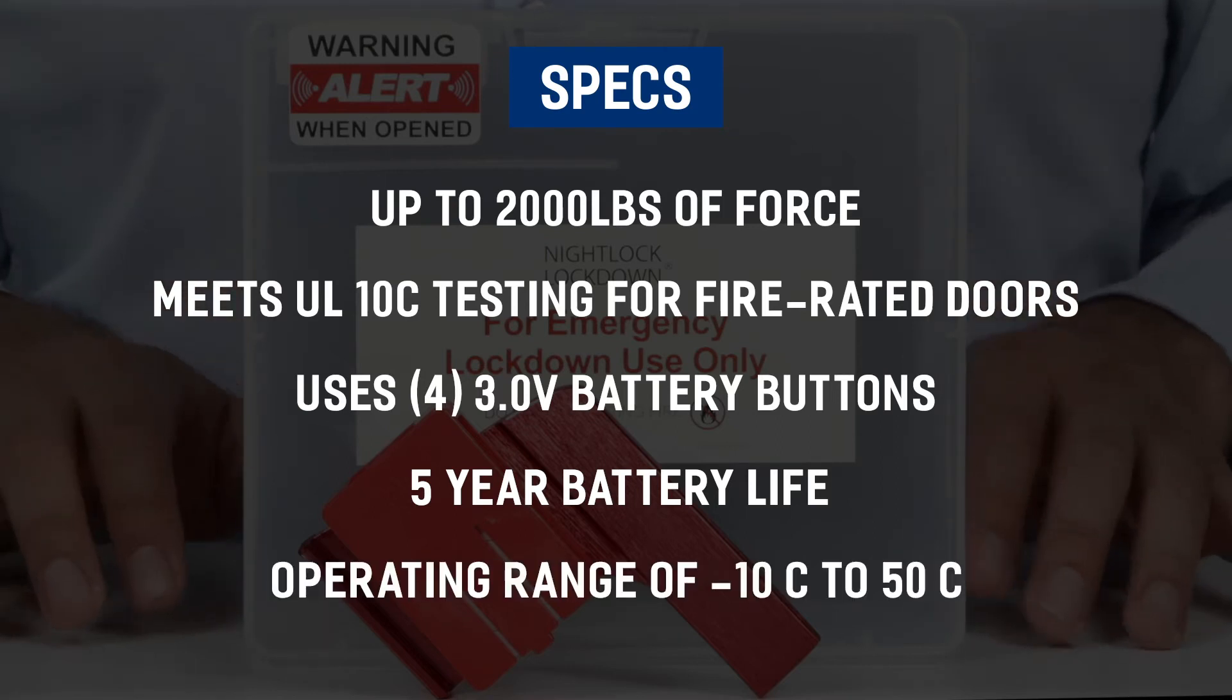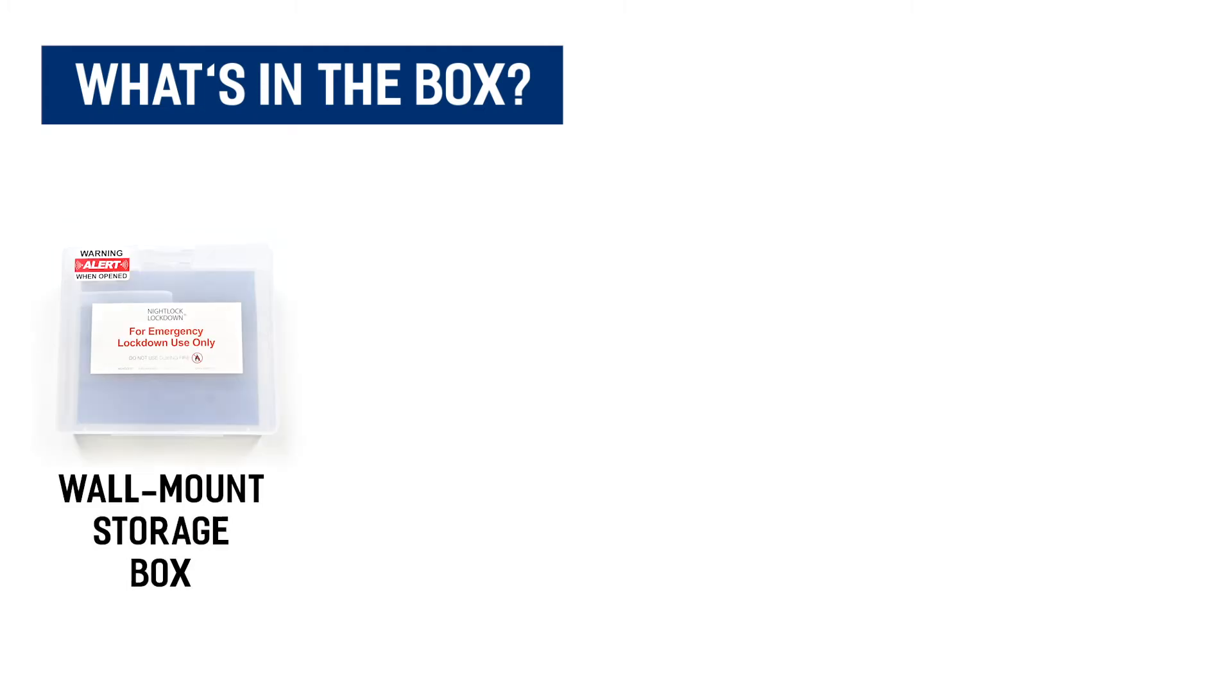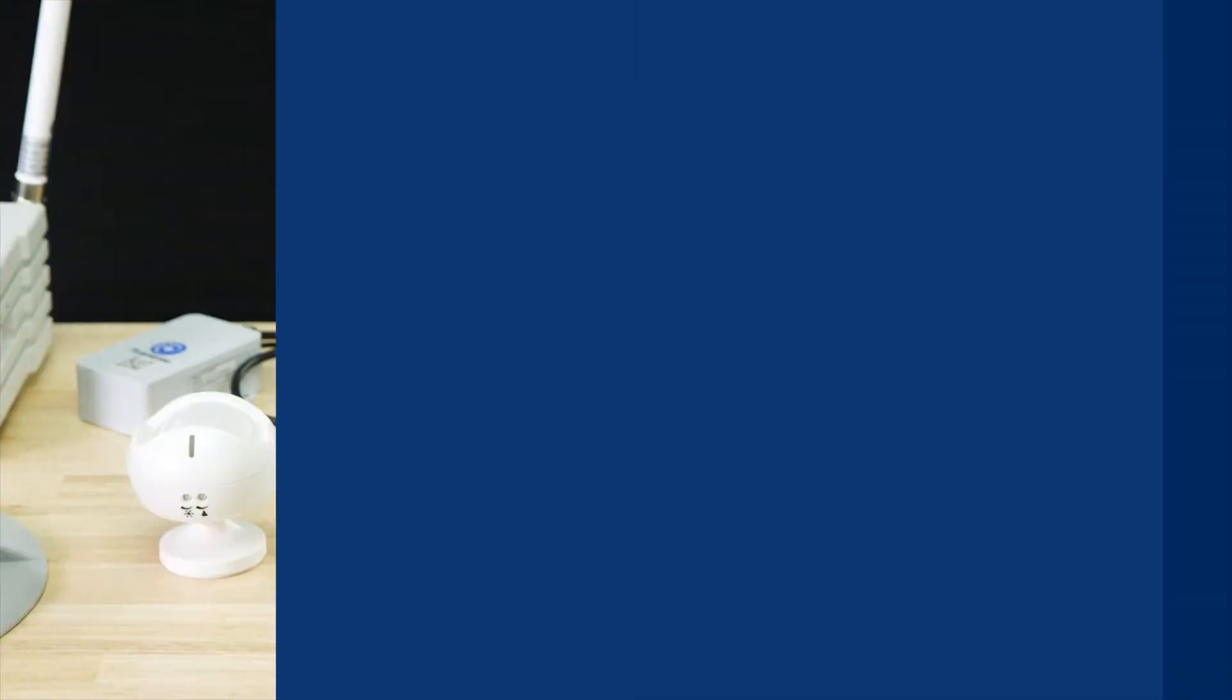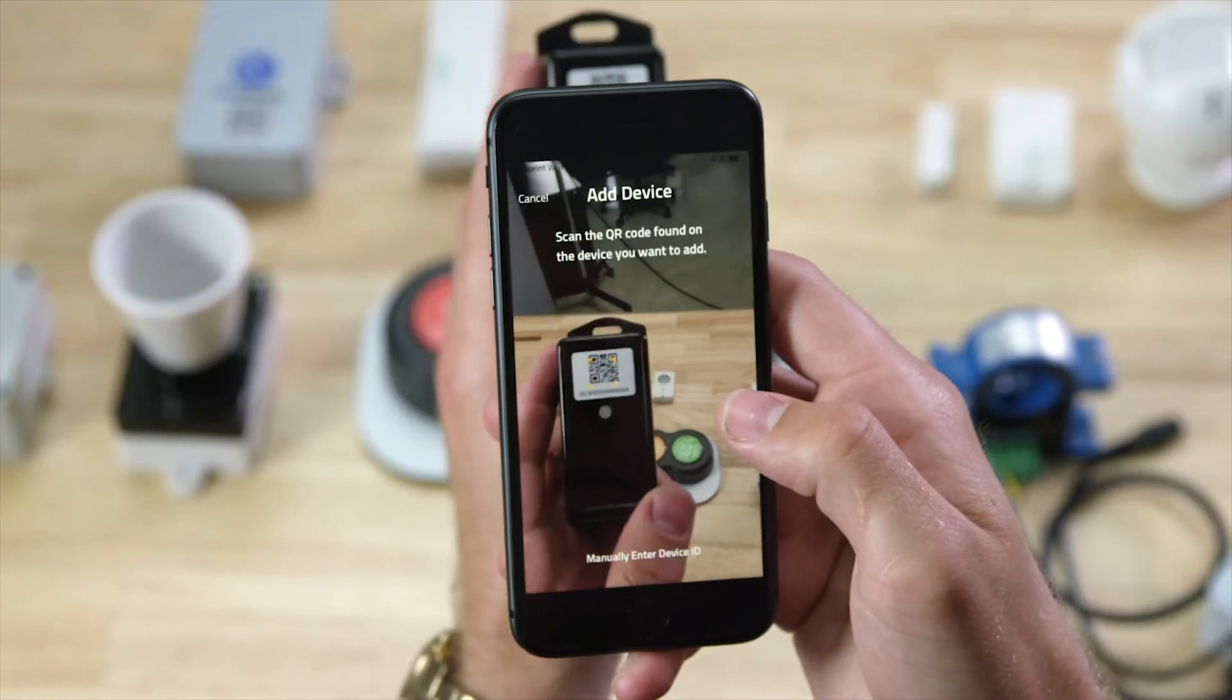Included in the package is your wall mount storage box, the red locking handle, two architect bolts, screws and anchors, and your open and closed sensors. Like with all of our devices, you simply scan the QR code to begin using the device on any IoT platform.